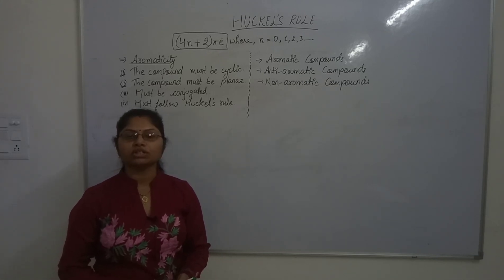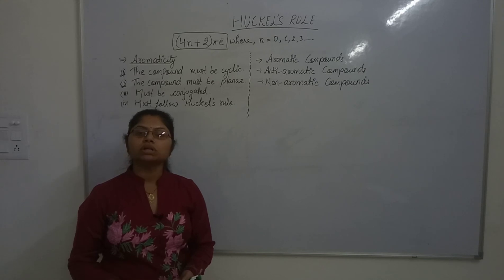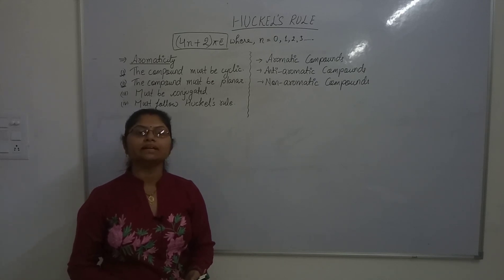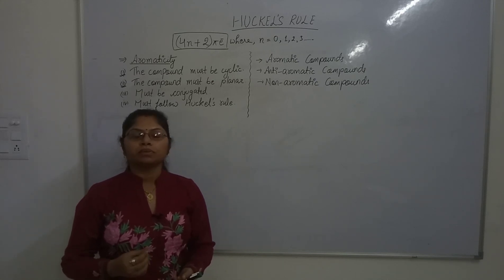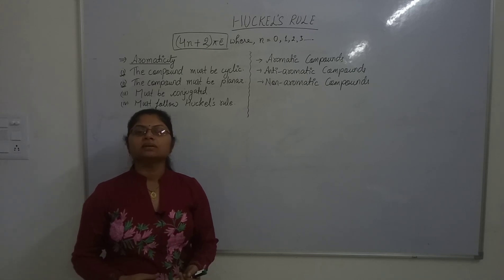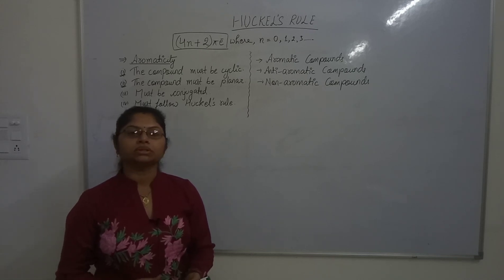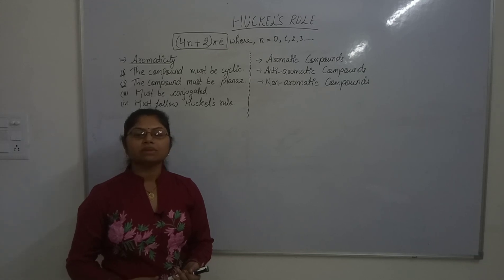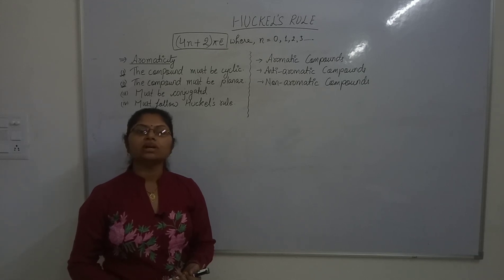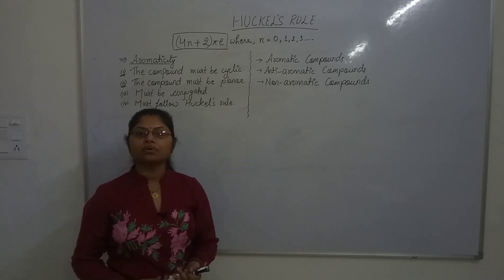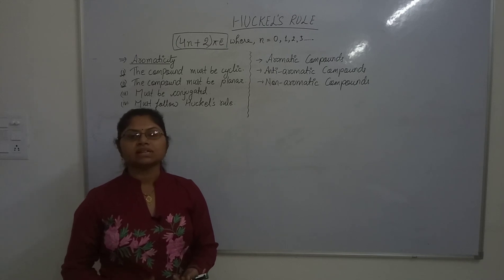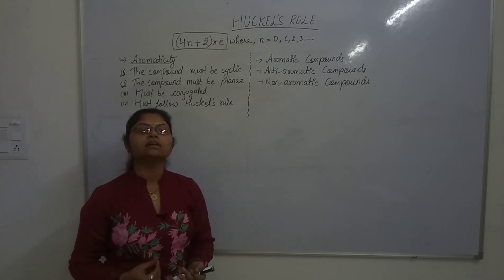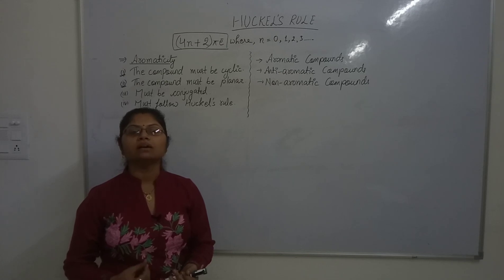Molecular orbital calculation for sigma and pi electrons has been separately done, keeping in mind the unsaturated, planar, and aromatic compounds. Since it is already assumed that sigma electrons are localized, calculation for pi electrons was started, and the first such calculation was done by Hückel, which is well known as Hückel's rules of aromaticity.